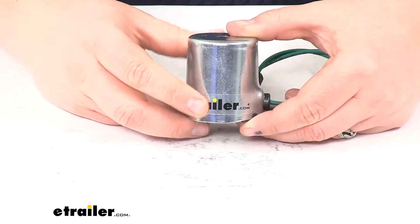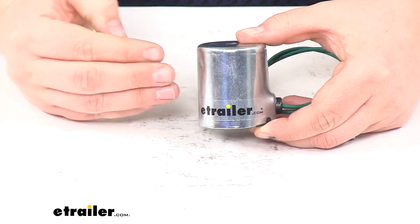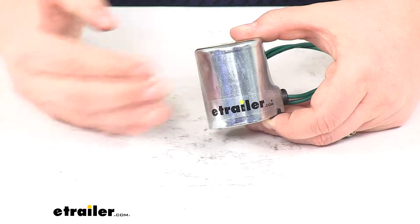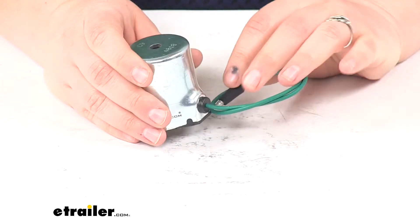Our solenoid is going to act as a connection between our snowplow and our battery to make sure that everything is working properly.